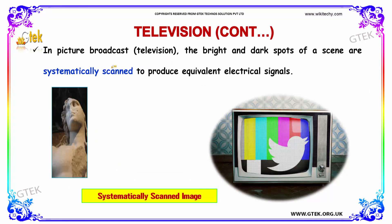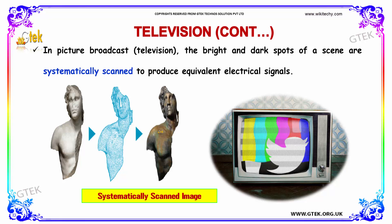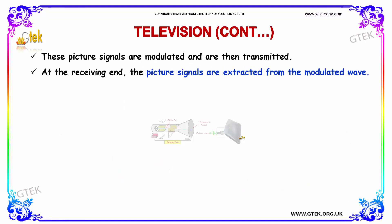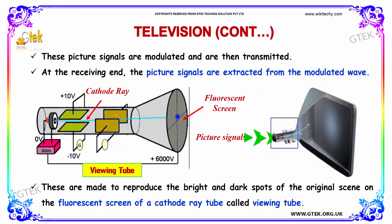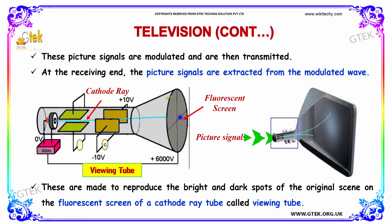In picture broadcast television, the bright and dark spots of a scene are systematically scanned to produce equivalent electrical signals. These picture signals are modulated and transmitted. At the receiving end, the picture signals are extracted from the modulated wave and are made to reproduce the bright and dark spots of the original scene on the fluorescent screen of a cathode ray tube called the viewing tube.